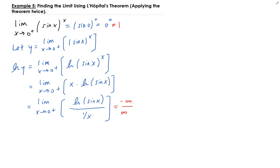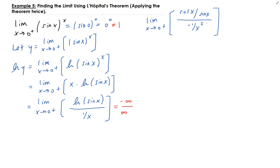Now let's apply L'Hôpital's theorem. We take the derivative of the top: the derivative of ln(sin x) is 1 over sin x times cosine x, which gives cosine x over sine x. The derivative of 1/x is minus 1 over x squared. Simplifying: cosine over sine is cotangent, and dividing by minus 1 over x squared gives us minus x squared times cotangent x.